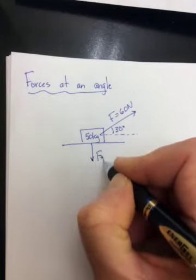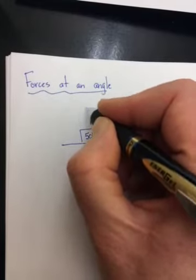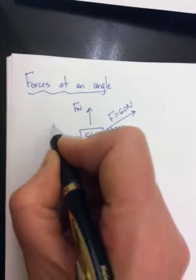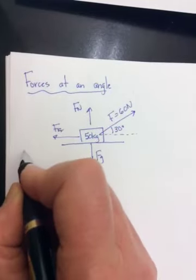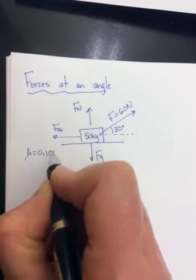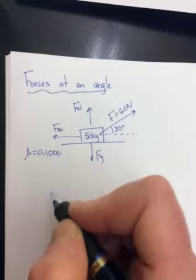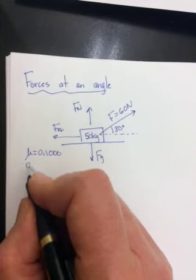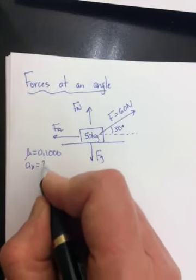Fg is still acting down. Fn is still acting up. Friction is still acting backward. And we're going to say friction is like 0.1. I better not make it very big because that 60 newtons isn't very big. And the question would be then what's the acceleration of the box?